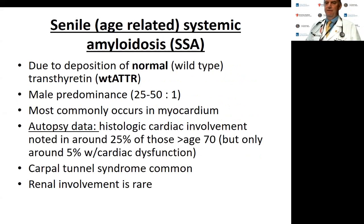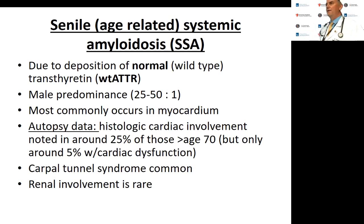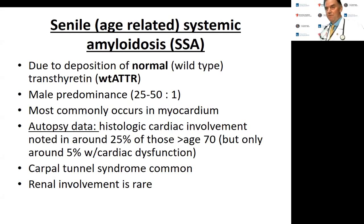Wild type ATTR — formerly called senile or systemic amyloid — involves accumulation of the TTR protein in the heart. These patients have wild type TTR genes, but for unclear reasons some people accumulate this protein in the heart as they age. It has a dramatic male predominance of 25 to 50 to 1. Autopsy data shows about 25% of people over age 70 have evidence of wild type TTR amyloid in their heart, but only about 5% have cardiac dysfunction. Carpal tunnel syndrome can also occur; renal involvement is quite rare.